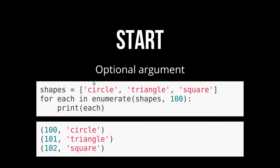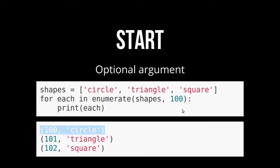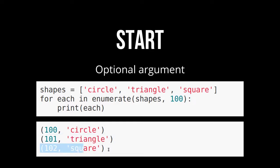One thing that is cool: you can do an optional start. So we've got that shape list right here, and for each enumerate we're going to actually tell it when to start counting. It's just getting those tuples, and it actually starts at the start number. So if we give it start equals 100, it's going to start at 100, 101, 102. Could be useful.